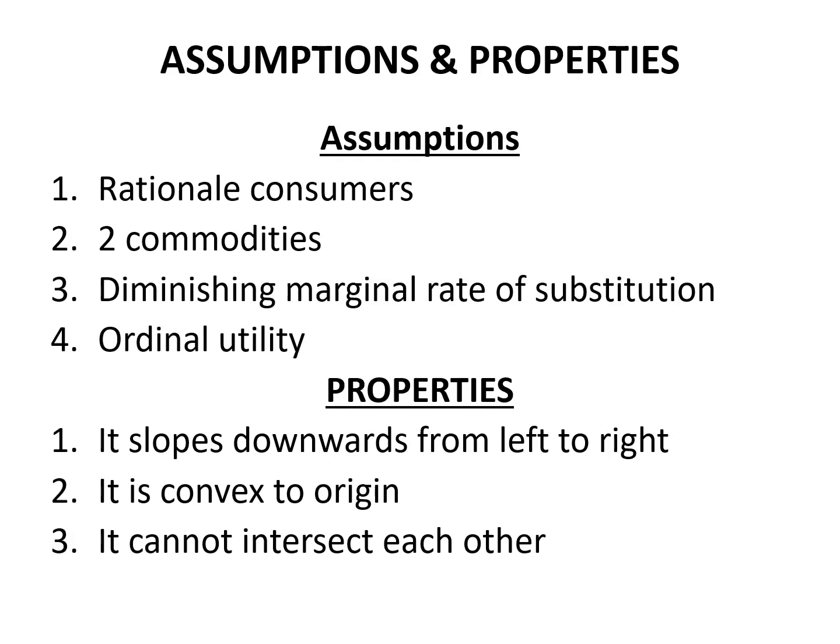Assumptions and properties. Assumptions are: rational consumers, two commodities, diminishing marginal rate of substitution, and ordinal utility. Rational consumers means a consumer always behaves logically and always looks forward to maximize his level of satisfaction.